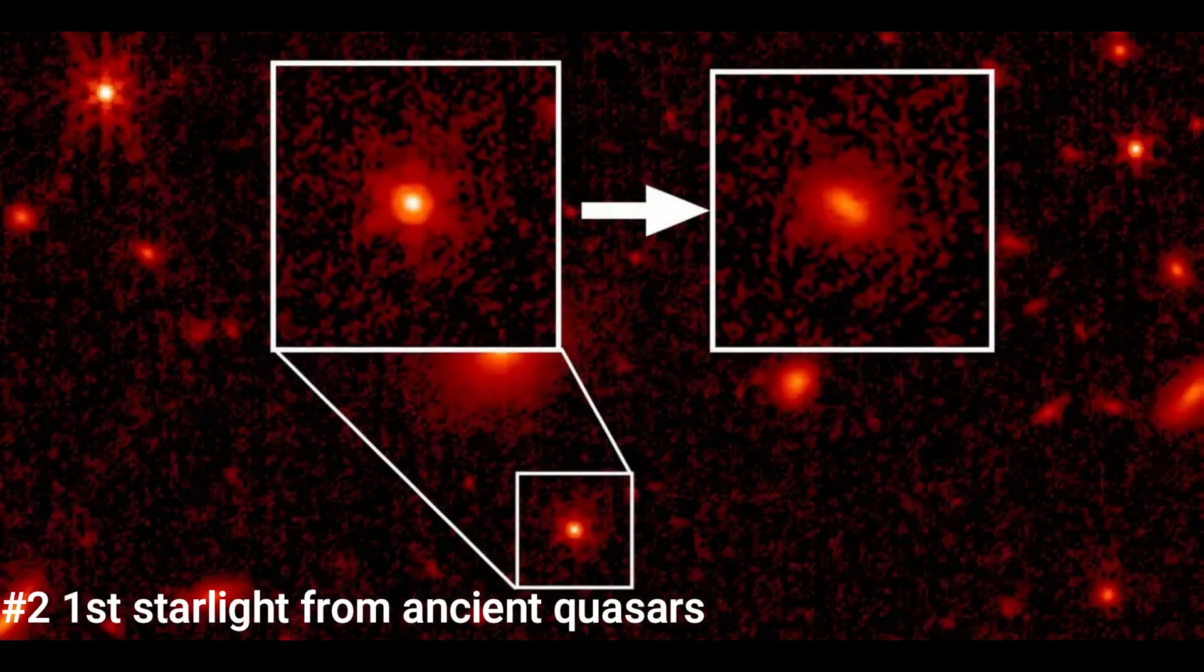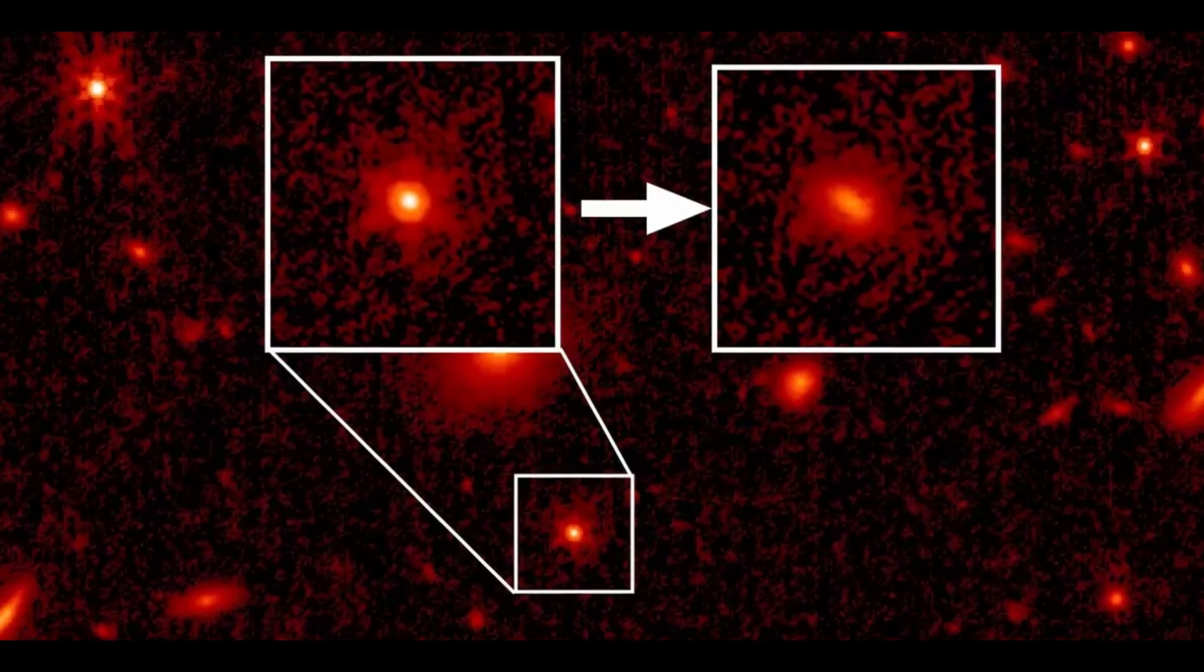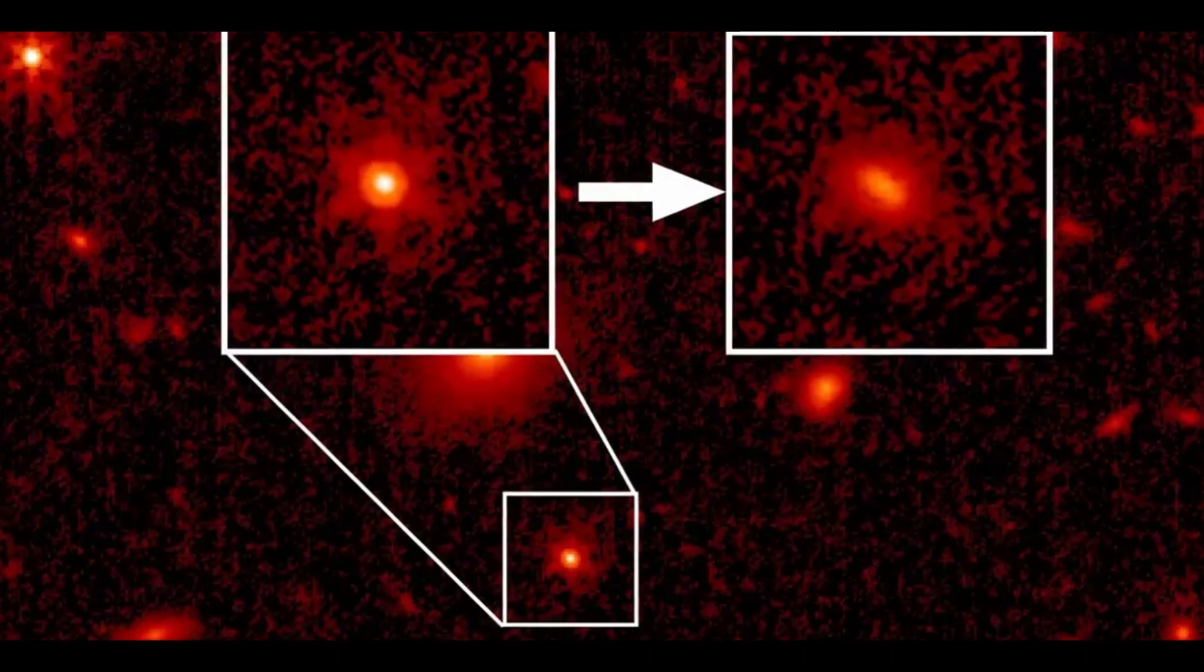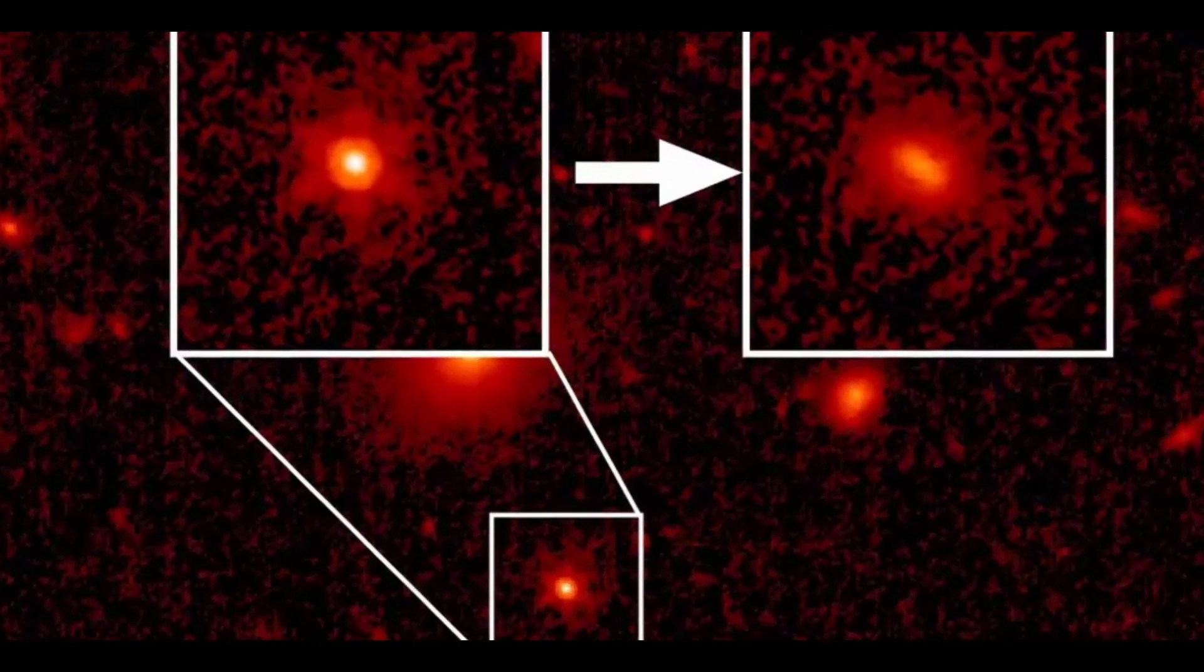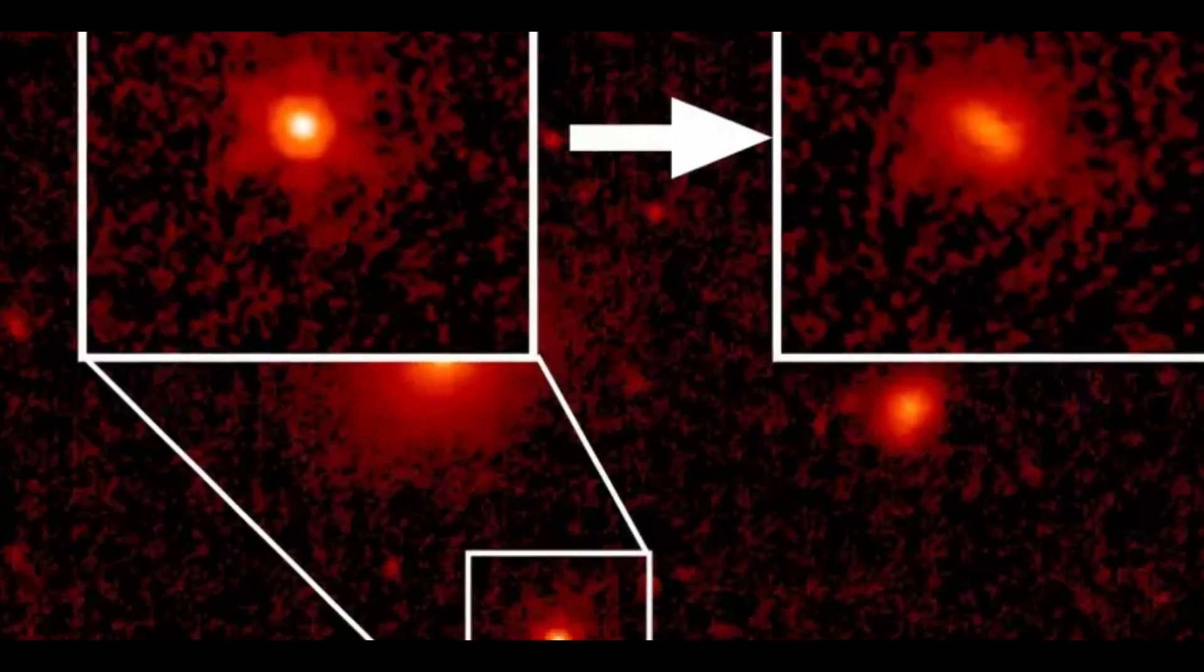Number 2. First starlight from ancient quasars. In the young universe, stars can no longer hide from the light coming from supermassive black holes they are feeding. Astronomers have observed illumination from two early galaxies that contain feeding supermassive black holes or quasars for the first time thanks to the James Webb Space Telescope.